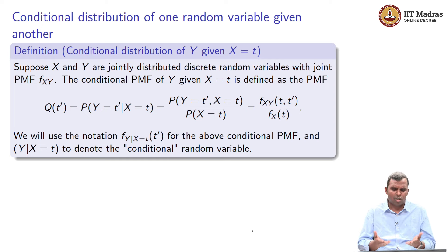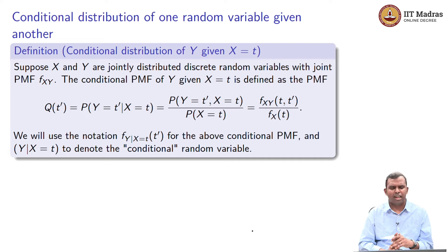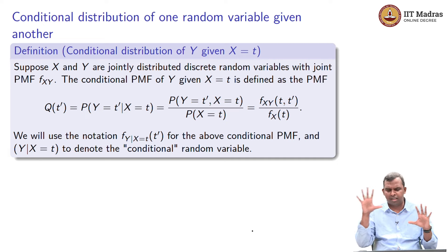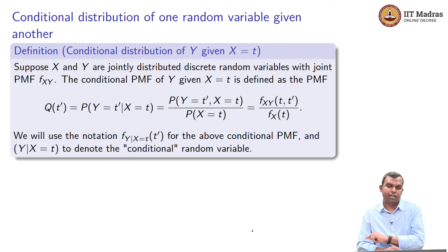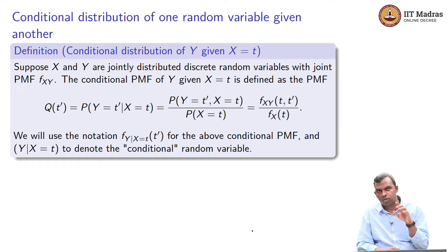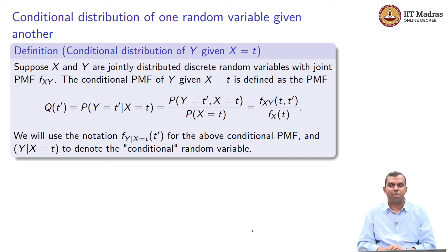It is very similar to the previous picture except that event A is now defined using another random variable. So let us say you have two random variables X and Y, these are jointly distributed, they have a joint PMF of X, Y — the table is given to you. I am going to define something called the conditional PMF of Y given X equals T. So X equals T has occurred — the random variable X has taken a value T, so the event X equals T has occurred.